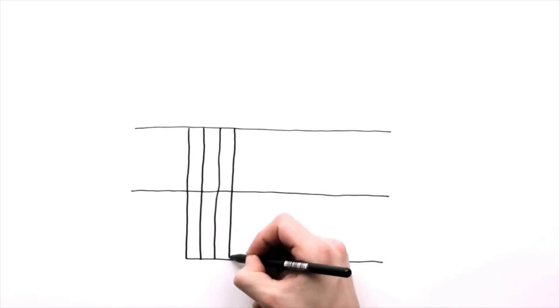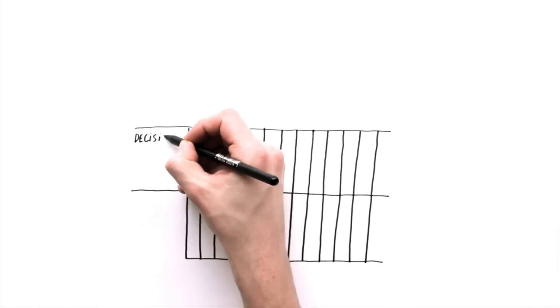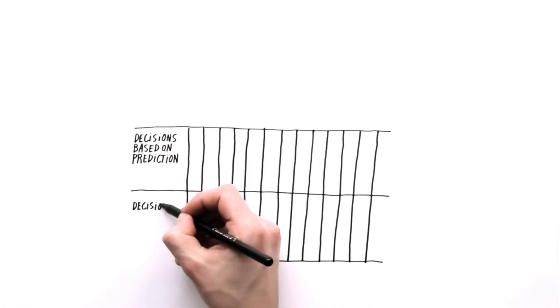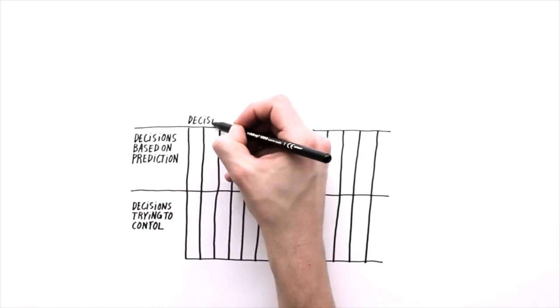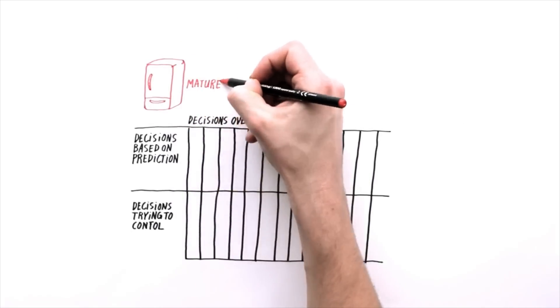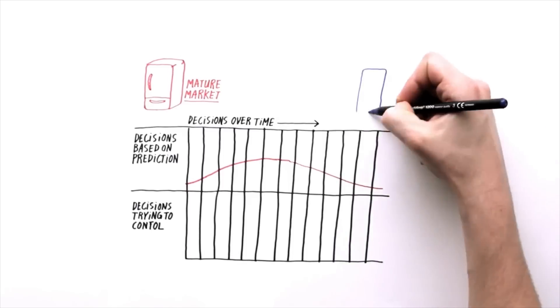As Stuart Reid proves, with an online simulation among executives divided in two groups, most of us are perfectly able to extrapolate historic data. In an uncertain market, however, we are counterproductive.